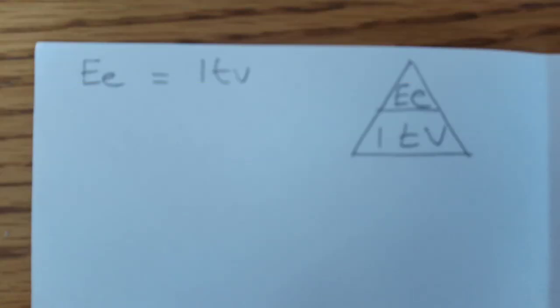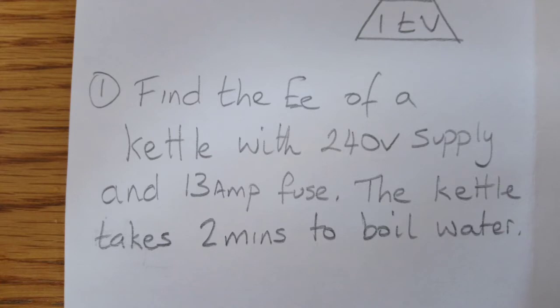We use our formula here, and the first question is finding the electrical energy. You've got a kettle with a 240 volt supply. It uses 13 amps and it's going to boil water for two minutes. So we have to convert the minutes into seconds.